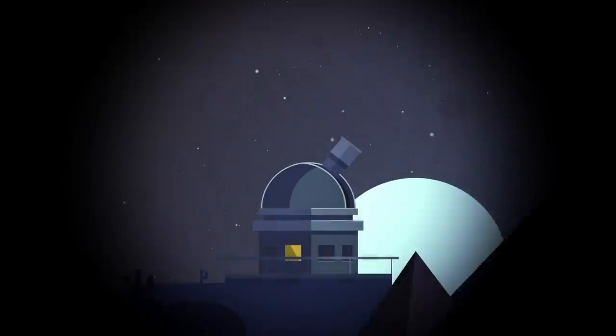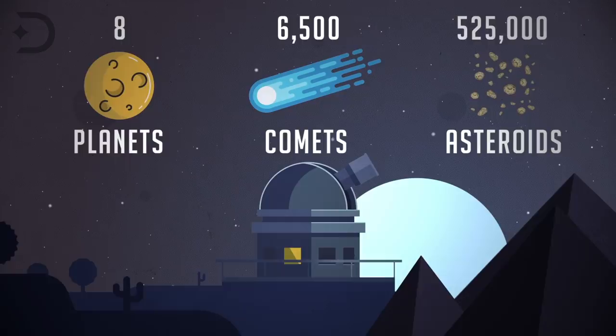Astronomers have catalogued eight planets, 6,500 comets, and more than 525,000 asteroids.